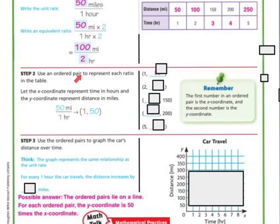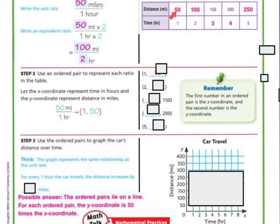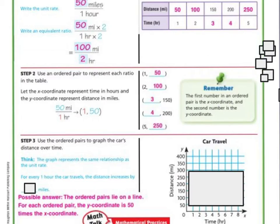Now I can use ordered pairs to represent each ratio in the table. The x-coordinate represents time in hours, and the y-coordinate represents distance in miles. So 50 miles for 1 hour gives the ordered pair (1, 50). The full set is: (1, 50), (2, 100), (3, 150), (4, 200), (5, 250).